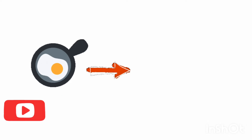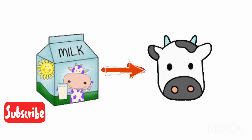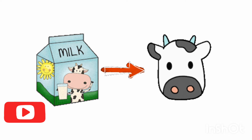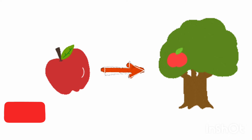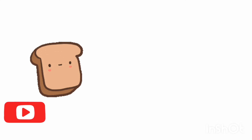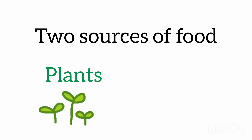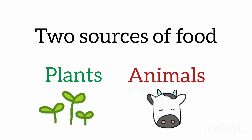We get egg from hen. Milk comes from cow. And apple is from trees or plants. So basically, there are two sources of food — one is plants, and the other is animals.